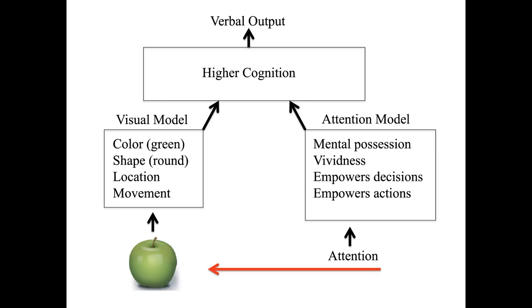When the information from these two models, the apple model and the attention model, when those two models are blended together, and when that information reaches higher cognition, then it provides a sufficient basis for the system to think, there is an apple, it's green, it's round, and I have a subjective experience of it. You need both types of information to form that belief and to make that claim.